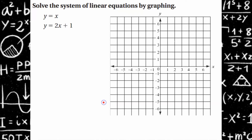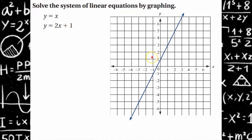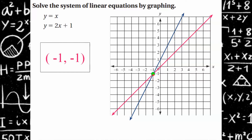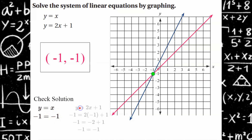Welcome back. Let's see how you did. We're going to graph the first line, y equals x. I have a y-intercept of 0 and a slope of 1. My second line has a y-intercept of 1 and a slope of 2 — rise 2, run 1. My point of intersection is the ordered pair (negative 1, negative 1). Checking the first equation, y equals x: replacing y with negative 1 and x with negative 1 — it checks. For the second equation, replacing y with negative 1 and x with negative 1: 2 times negative 1 is negative 2, and negative 2 plus 1 is negative 1. It checks.